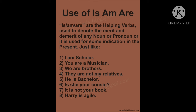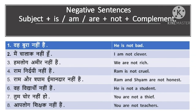'You are a musician. We are brothers. They are not my relatives. He is a bachelor. Is she your cousin?' Here are the sentences: 'He is not bad. I am not clever. We are not rich. Ram is not cruel. Ram and Shama are not honest. He is not a student. You are not a thief. You are not teachers.' Here is how 'is', 'am', or 'are' are used in a sentence.